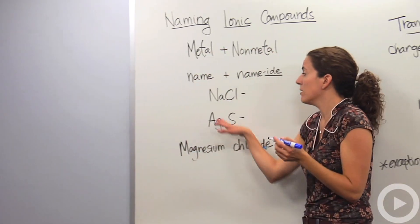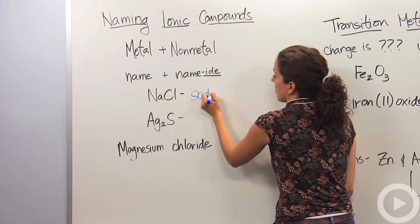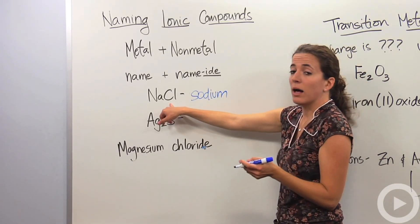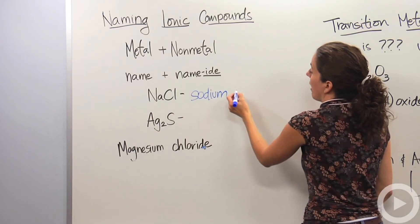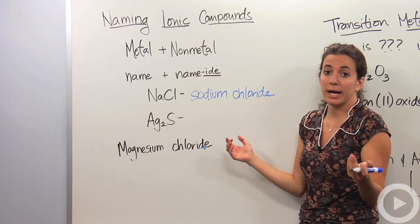Let's take table salt, for example. This Na we know is sodium, we're going to keep it as sodium. This Cl we know is chlorine, we're going to drop that and make it chloride. So together the whole thing is going to be sodium chloride. Pretty easy.